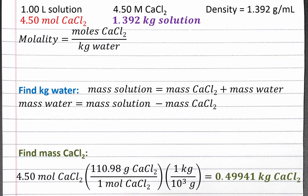We use the molar mass to convert from moles to grams of calcium chloride and then convert into kilograms. We get 0.49941 kilograms of calcium chloride.